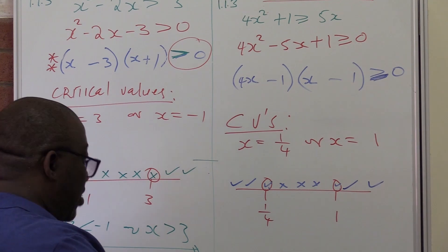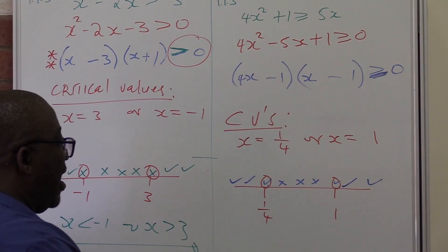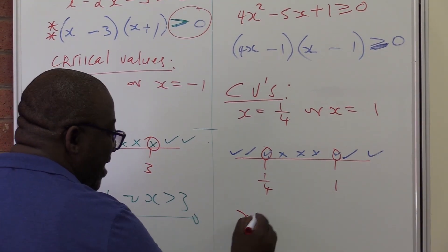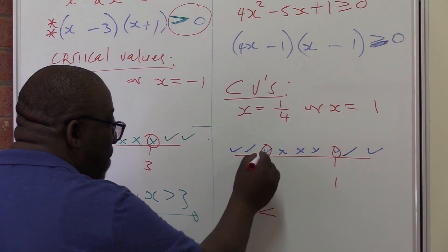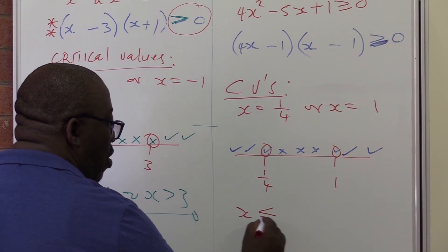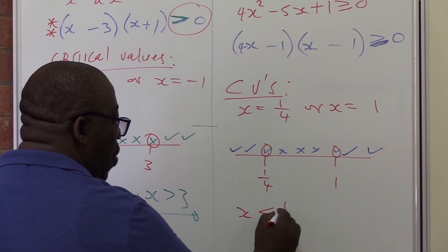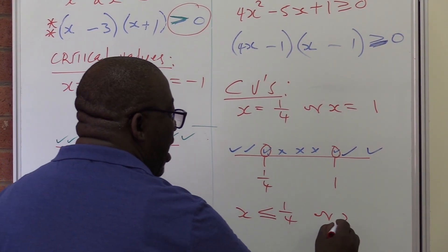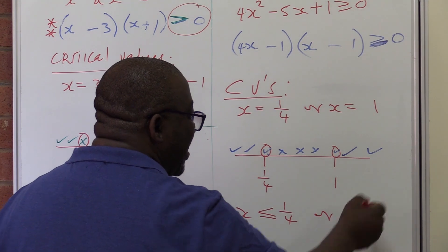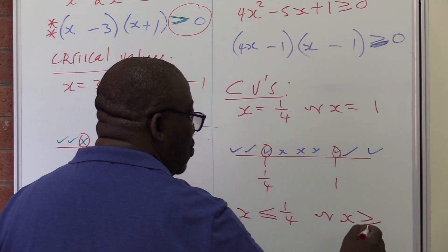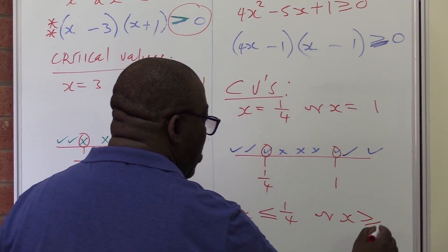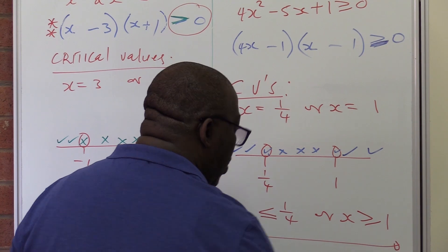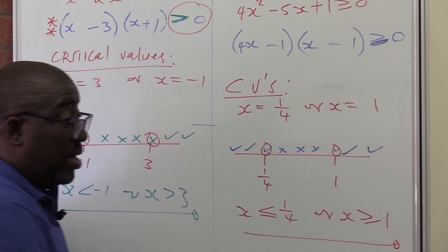Now let's write our solutions for the next example. Our x are all the values that are less than or equal to one over four. Or x is greater than or equal to one. This is how you go about writing these inequalities.